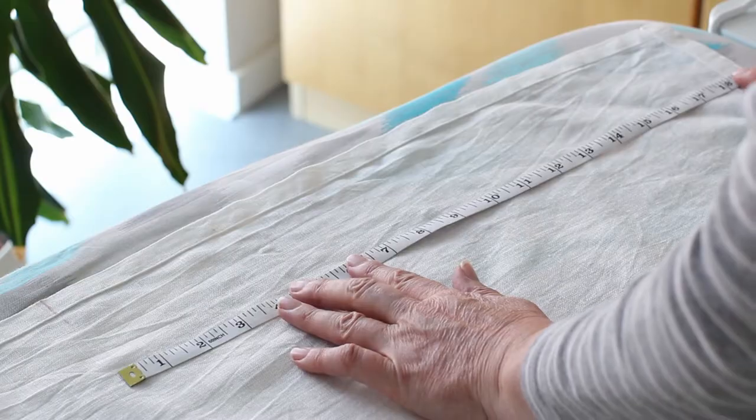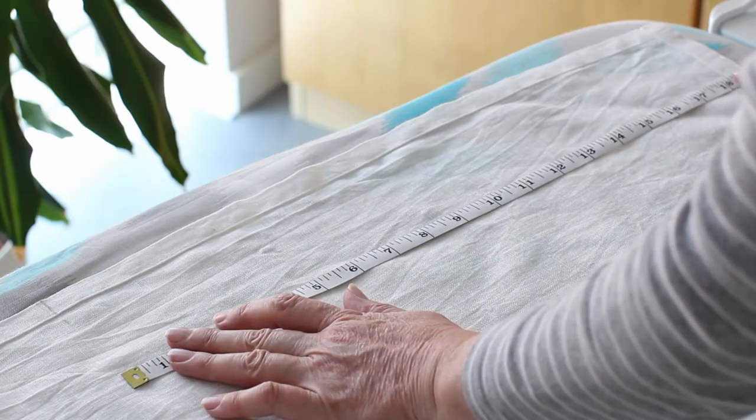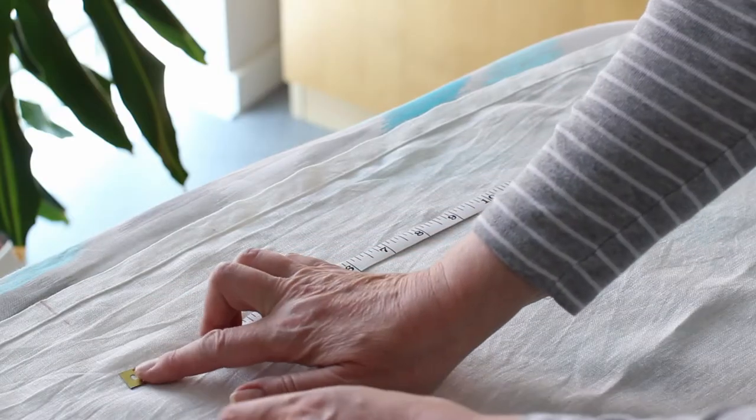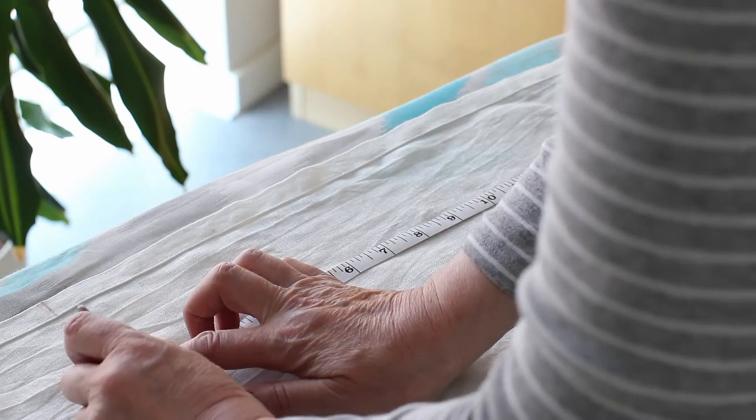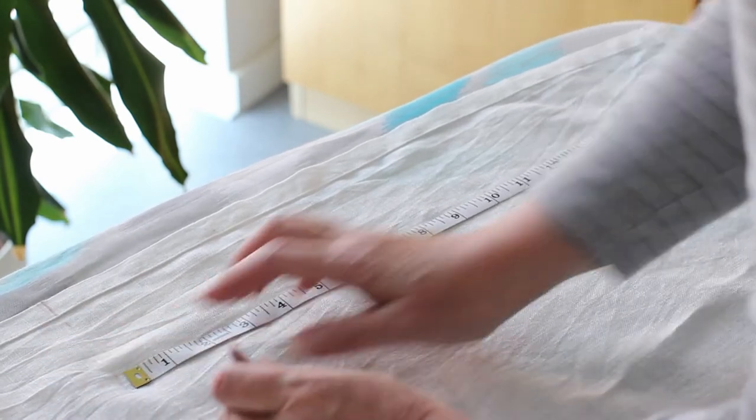Take your curtains off the pole and put them onto the floor or a table and measure from where you pinned to the bottom of the curtain. Make a note of the measurement.